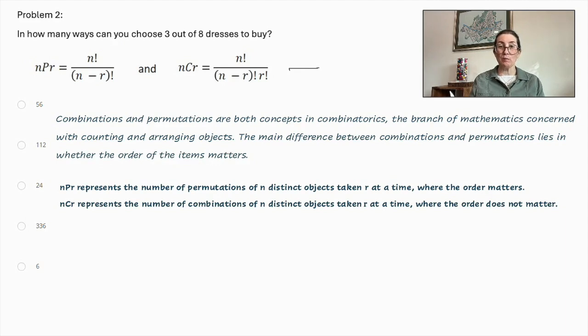Combinations and permutations are both concepts in combinatorics, the branch of mathematics concerned with counting and arranging objects. The main difference between combinations and permutations lies in whether the order of the items matter. Now we've got NPR here and NCR here. What do they mean? NPR represents the number of permutations of N distinct objects taken R at a time where the order matters. NCR represents the number of combinations of N distinct objects taken R at a time where the order does not matter.